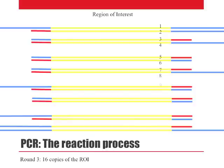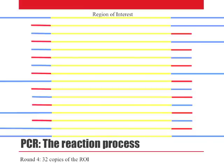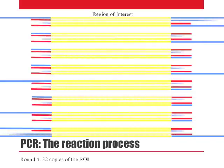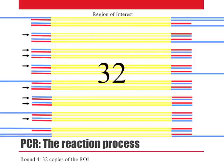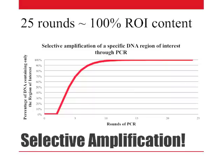Importantly, among these 16 copies, we will have also obtained two double-stranded fragments of DNA that contain only the region of interest. These two fragments account for four out of 16 total copies of the region of interest, and therefore account for 25% of the total DNA at this stage. After just one more round of PCR, we will now have 32 copies of the region of interest, including eight double-stranded fragments with only the region of interest. These eight fragments represent 16 out of 32 total copies of our region of interest, and therefore account for 50% of the total DNA at this stage. As this graph indicates, with each successive round of PCR, the percentage of DNA containing only the region of interest climbs until it approaches 100%. This selective amplification is an important aspect of the PCR process.